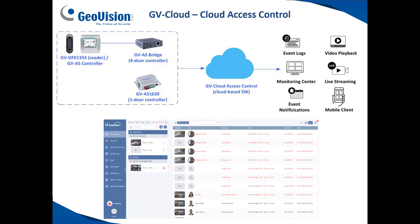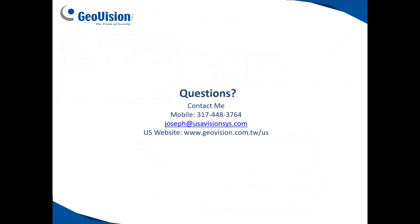There are two purchasing options for cloud access control. Option one is to pay monthly and record only the access control card data into the cloud website — no video snapshot included. Option two is to pay for both the access control data and the video snapshot, giving you 365 days of snapshots plus access control data stored and viewable in the cloud. For further information on our product line, please check us out at www.geovision.com.tw.us. Thanks a lot for watching.